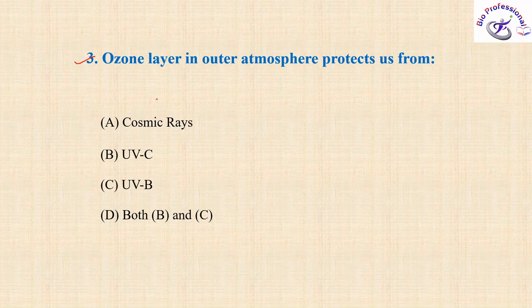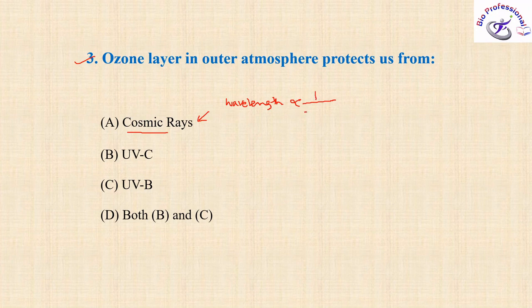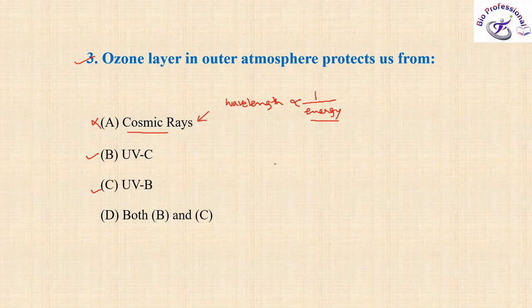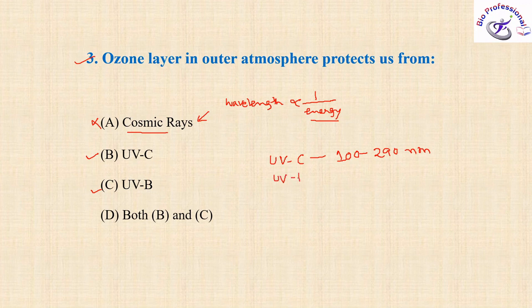The next question: the ozone layer in the outer atmosphere protects us from what? Cosmic rays will not be the answer because cosmic rays have high energy and low wavelength — we know it's an inverse relation between wavelength and energy. High energy means low wavelength; high wavelength means low energy. So we can discard cosmic rays. The remaining options are UVC and UVB. We can classify UV radiation depending on wavelength: UVC is from 100 to 290 nanometers.